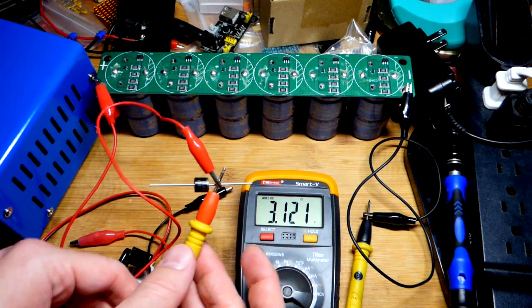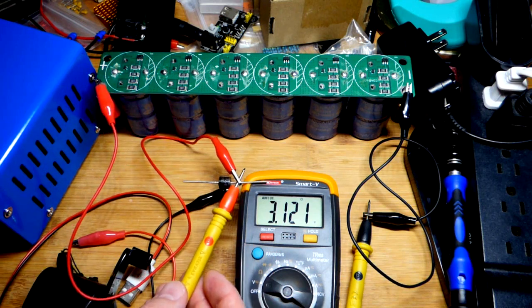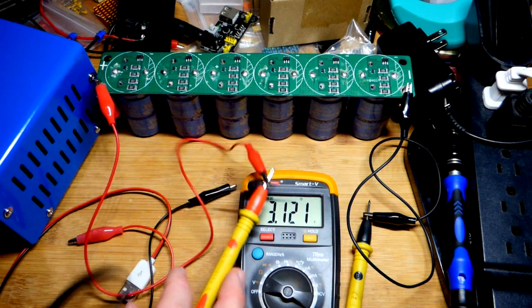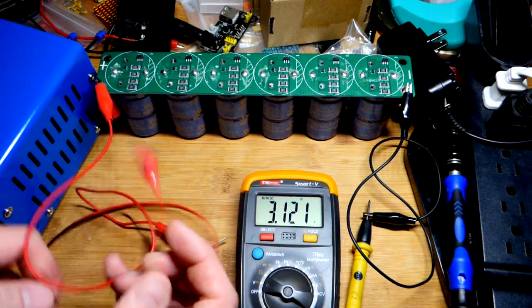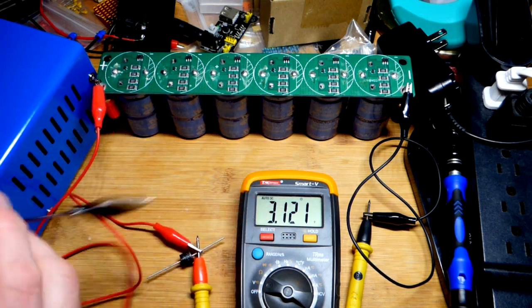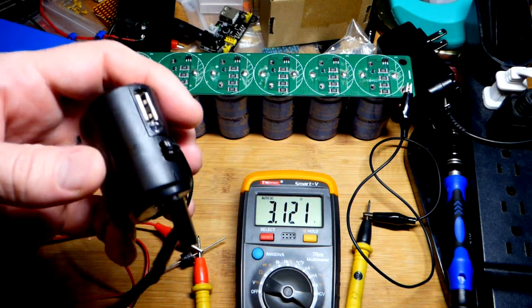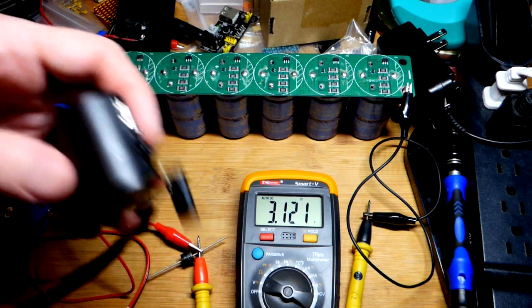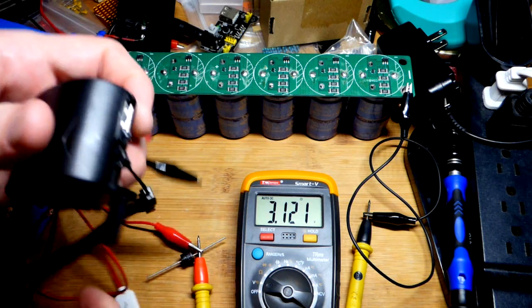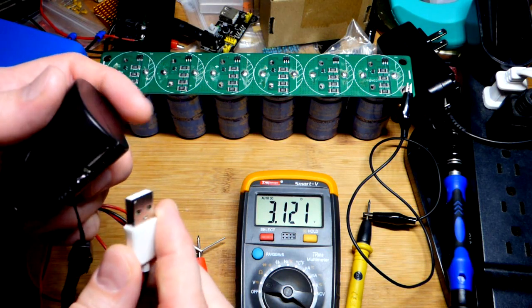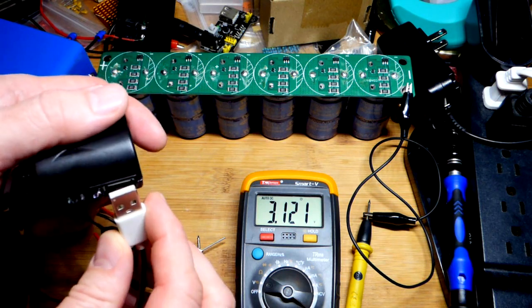Now I have a hand crank generator right here pretty straightforward. It has a USB outlet. So they say you can charge phones with this. Plus it's better in my opinion to charge a power bank. Power banks like erratic voltages more than phones do and then use the power bank later on to charge a phone as needed.